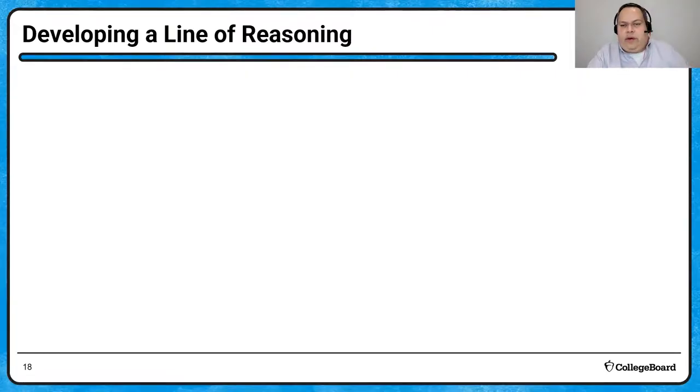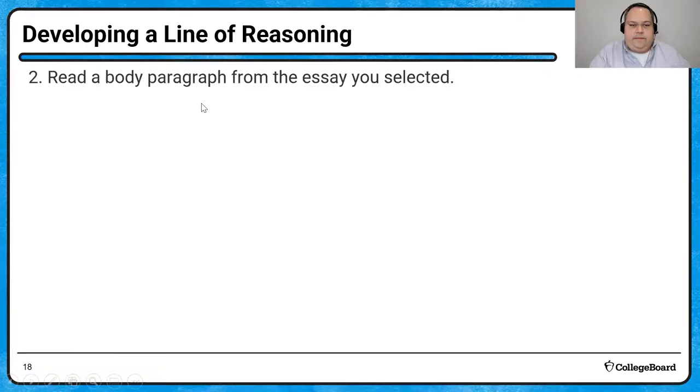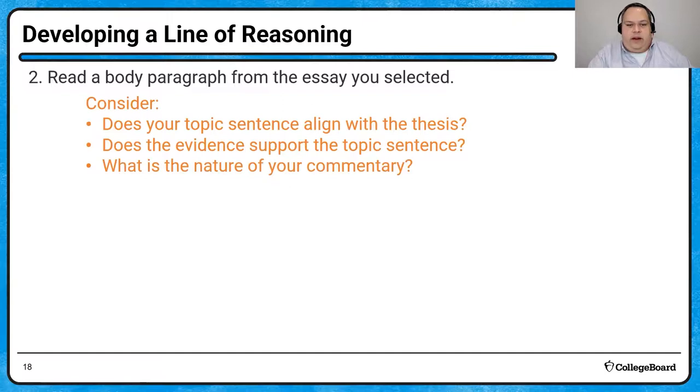Then I want you to turn to your body paragraph. Go ahead and pause the video and read your body paragraph and then return to this slide. After you've read the body paragraph, I want you to consider these three questions. Does your topic sentence align with the thesis? Do you see a direct relationship, a connection, an echo of the thesis in your topic sentence? And your topic sentence should be that first sentence, the opening sentence of the body paragraph. I want you to look at the evidence that you provide. Is that evidence working to support the claim that you made in the topic sentence? And the beauty of it is that if the evidence is supporting the topic sentence and the topic sentence comes from an idea in your thesis, then all the evidence you provide in your essay will essentially be arguing or defending the thesis that you open the essay with.